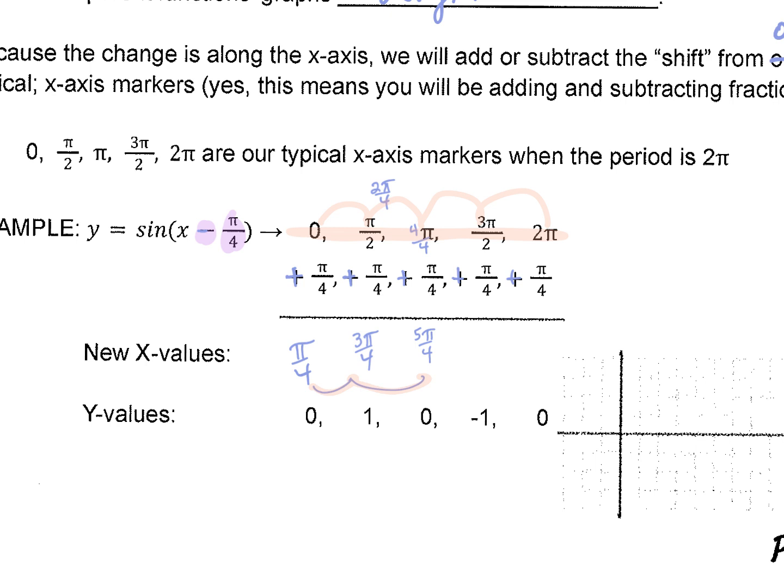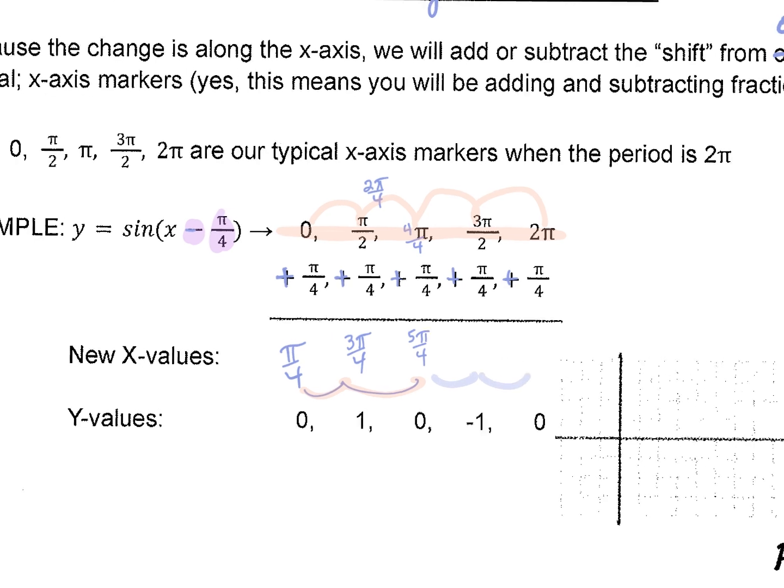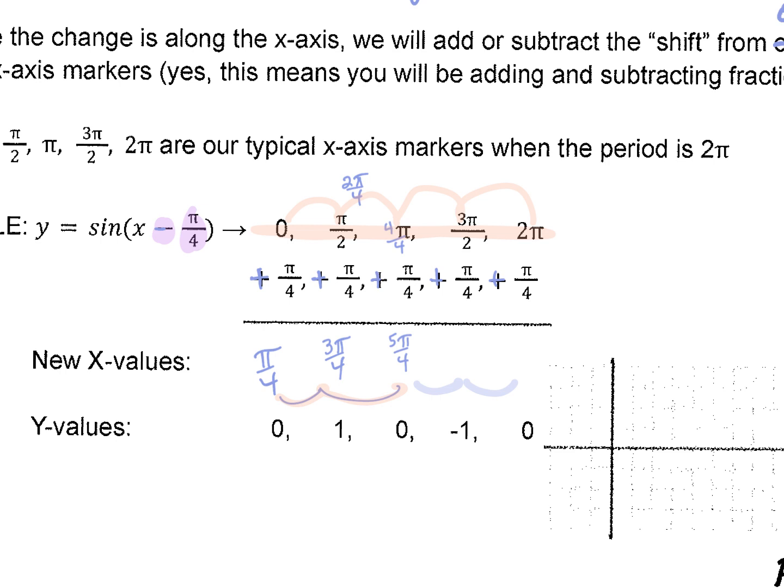So if you want to just continue the pattern and say, okay, I'm going to continue to add 2 pi over 4, you can do that, or you can do the math, which for many I think that's helpful. 6 pi over 4 plus 1 pi over 4 gives us 7 pi over 4. And then the 2 pi, we're going to think of that as 8 pi over 4 plus 1 pi over 4, so we get 9 pi over 4.